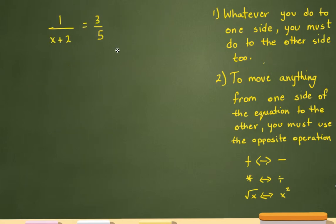And the last one I have here is cross multiplication. 1 over x plus 2 equals 3 over 5. In order to solve for this, I have to multiply this denominator with 3 up here, and this 5 with the 1 over here.